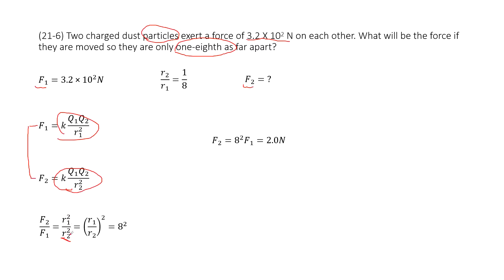And then we can see, we get the ratio r2 over r1 is 1 over 8. So now the ratio r1 over r2 is 8.